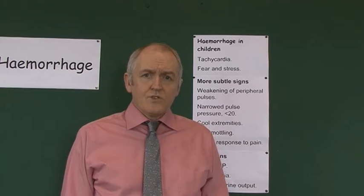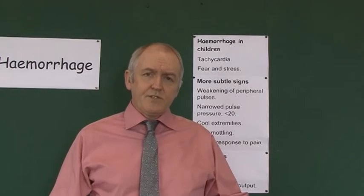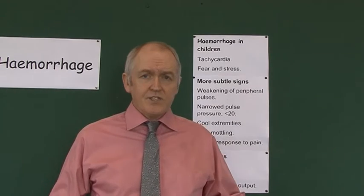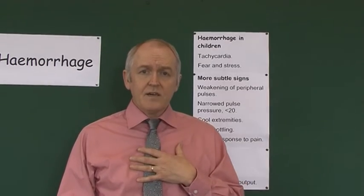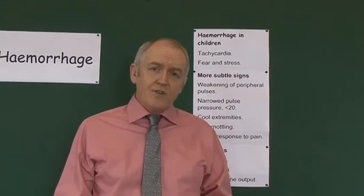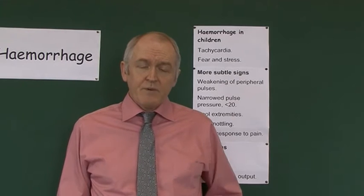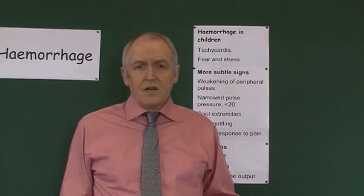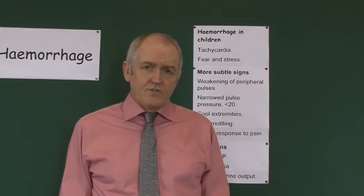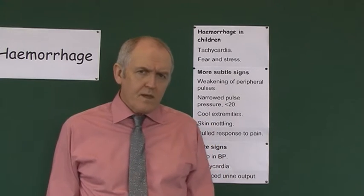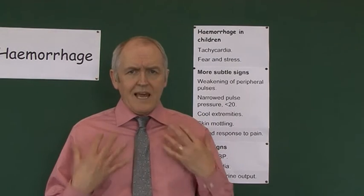The child will also develop cool extremities. A good tip is to feel the child centrally first — feel their abdomen, neck, or chest — and then feel their hands and feet to see if the extremities have become cool. Cool extremities are indications of peripheral vasoconstriction.